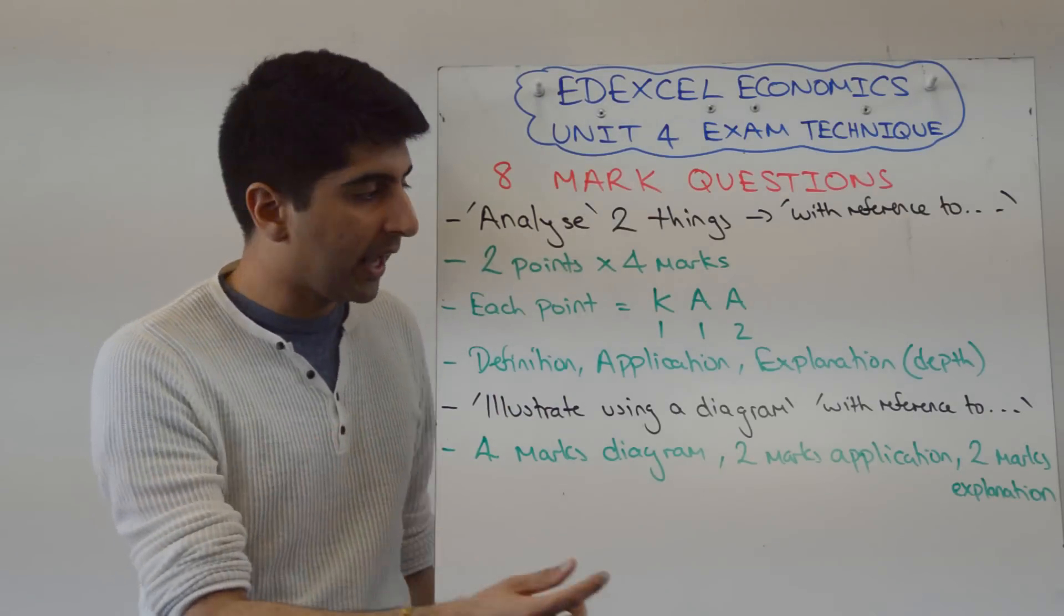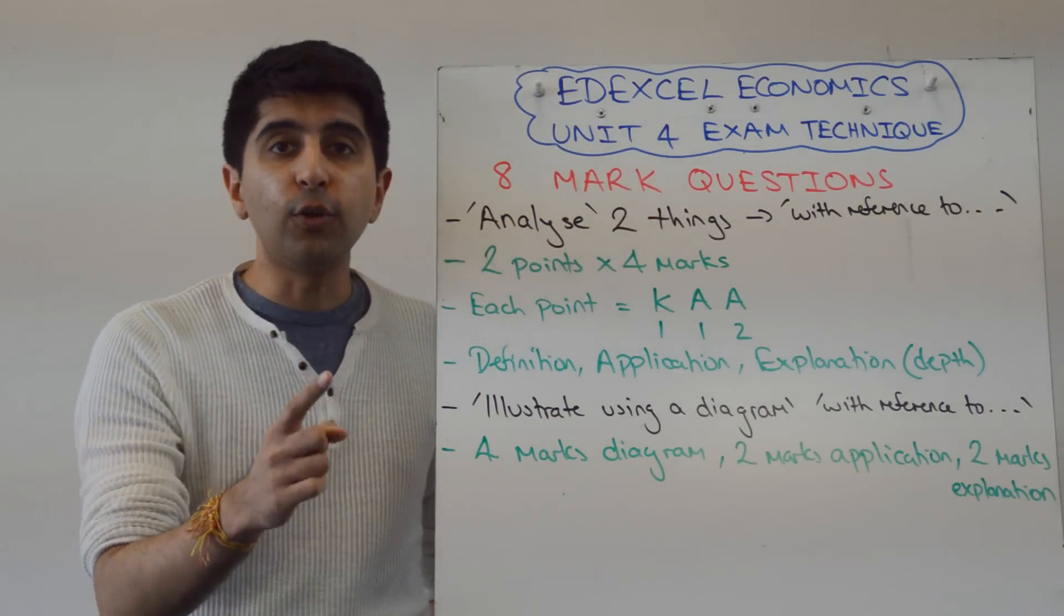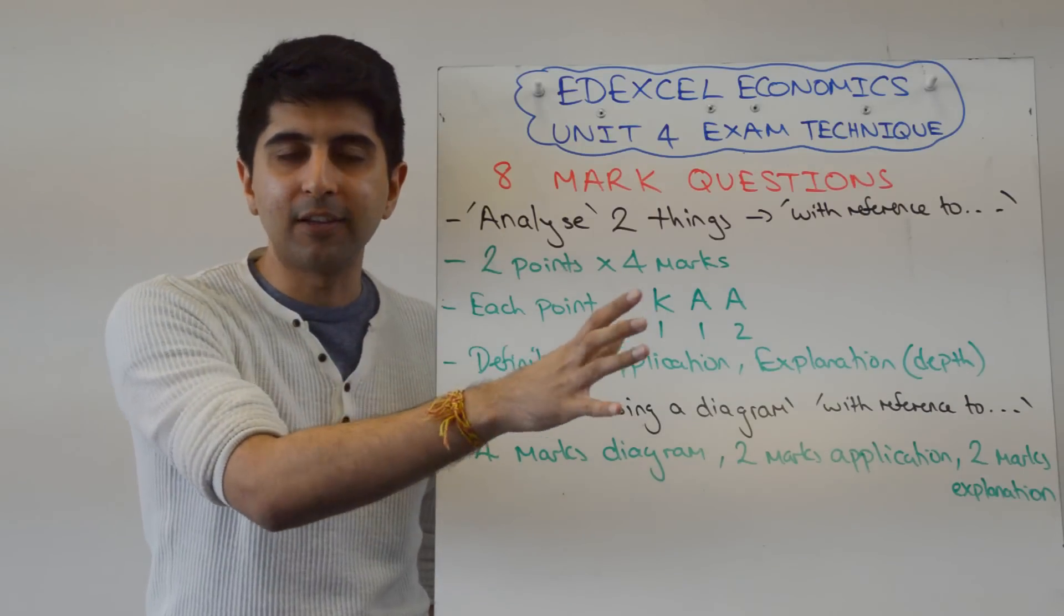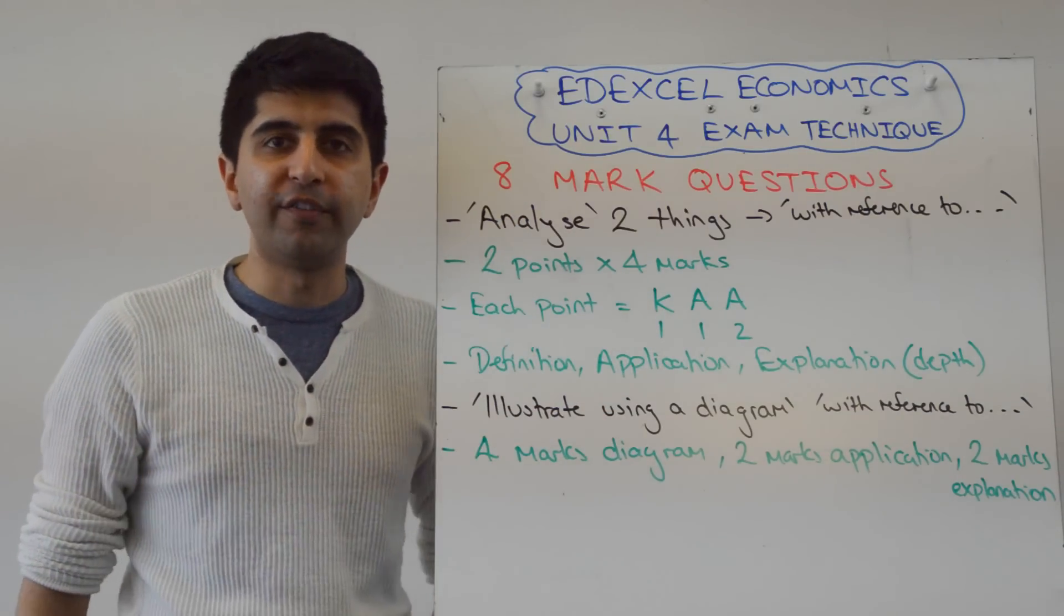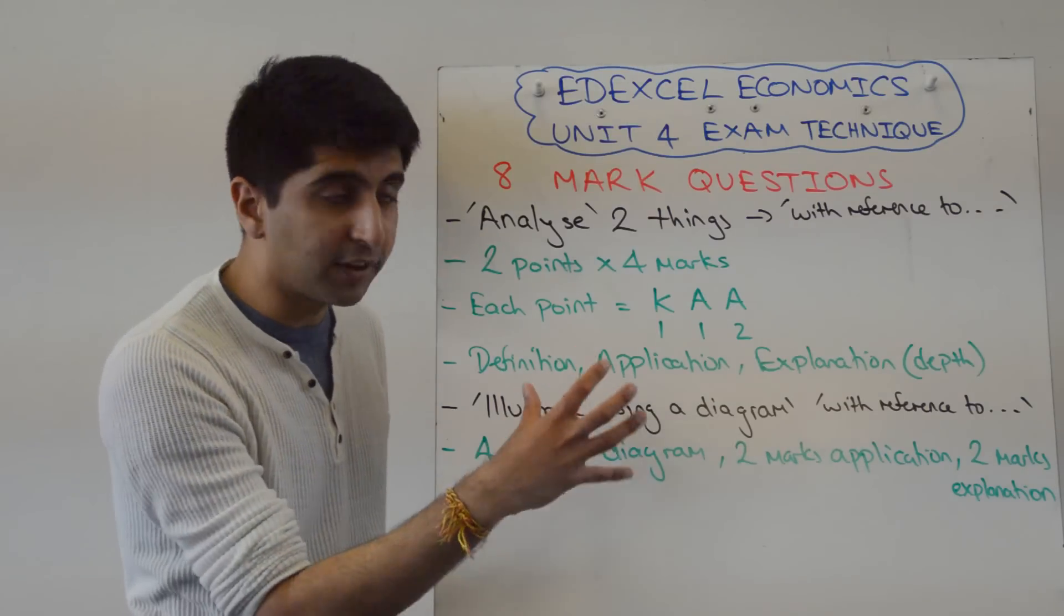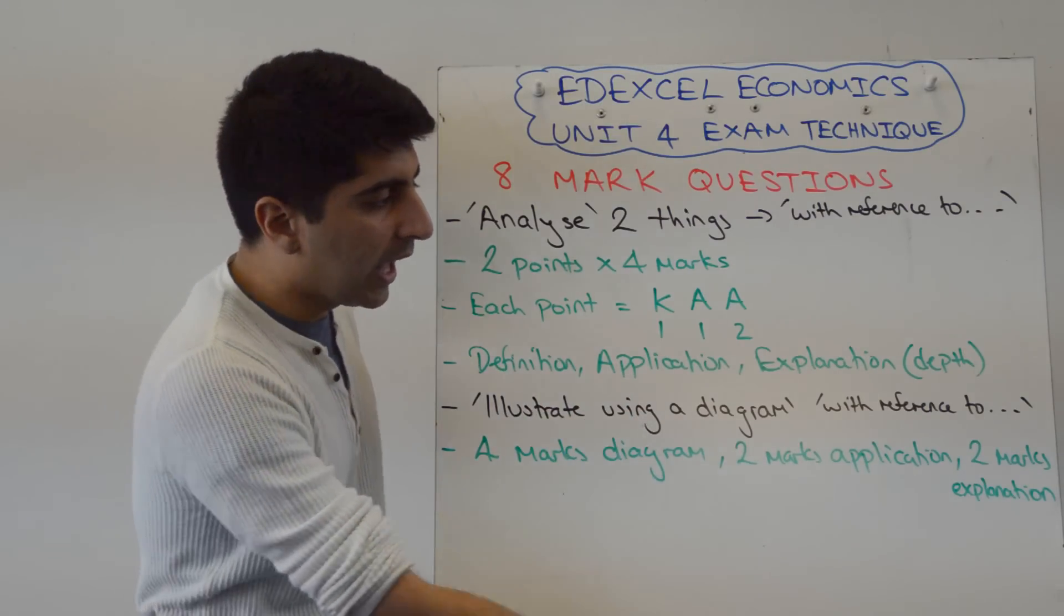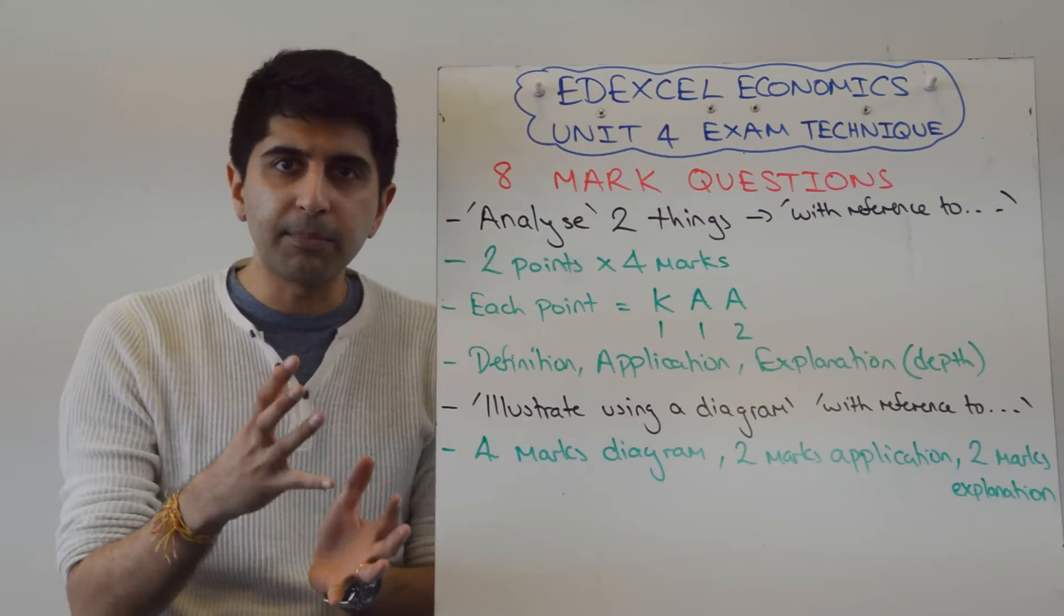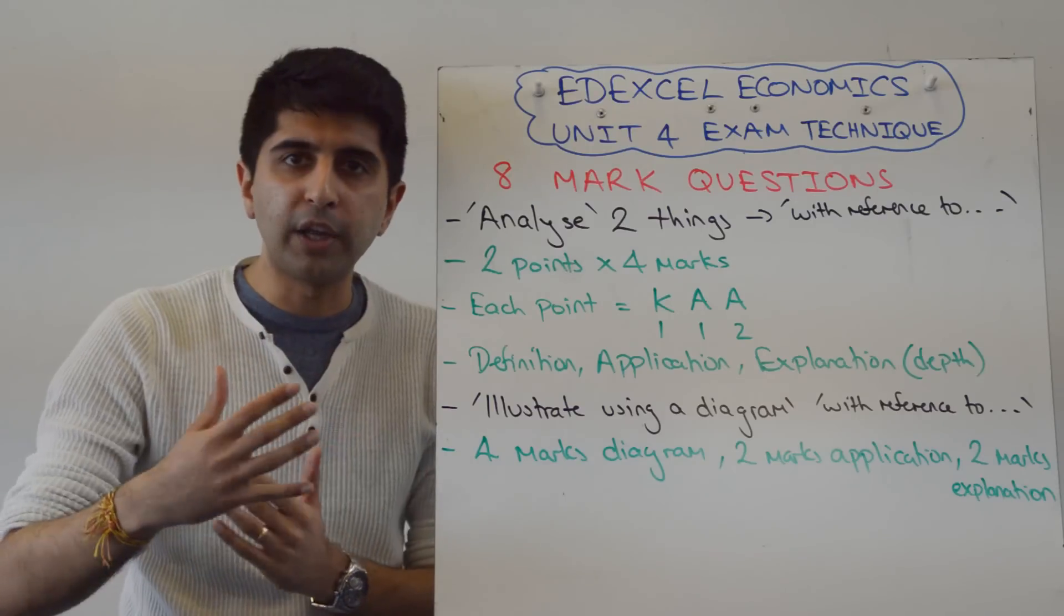Two marks for application. Two marks, all you need to do is to make one application point. One reference to the data or to the case study material, whatever they want you to refer to. One reference is enough for two marks. That's all you need if it's a diagram-related question here. And two marks for your explanation. So your explanation has got to be something related to your diagram. Explaining why you shifted curves. Explaining anything that's relevant to the question will get you two marks.